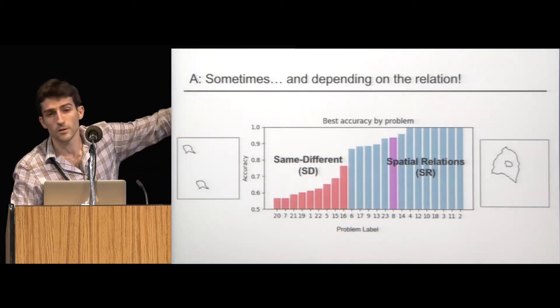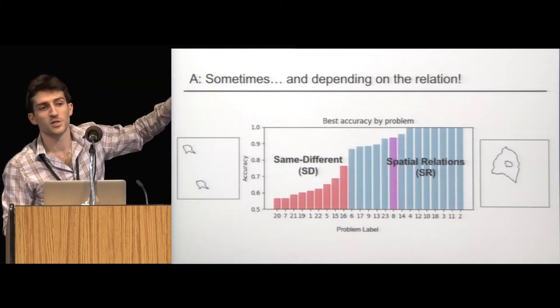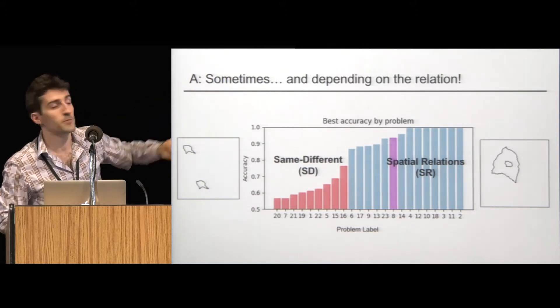So you'll see that to the far left, you see all the red bars. Those are the same different problems that resulted in these minimal accuracies. To the right, you'll see spatial relations problems that were basically solved quite easily across this somewhat coarse search that we did. The purple bar, you might guess, is actually a problem that involves the conjunction of those.